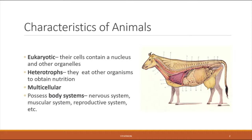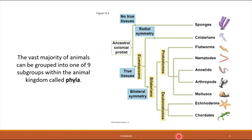We're going to walk through animals similarly to how we walked through plants, discussing different groups starting with the most evolutionarily primitive and moving up to higher levels of sophistication. These different groups are referred to as phyla — the singular form is phylum — and there are nine major animal phyla into which the vast majority of animals can be divided.